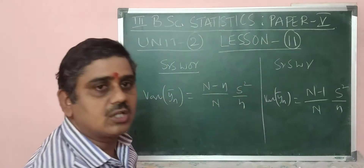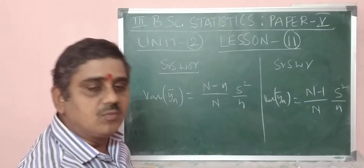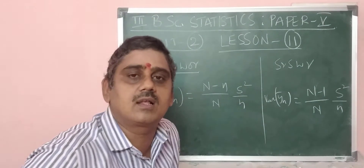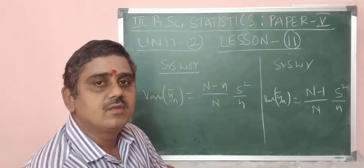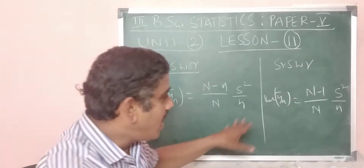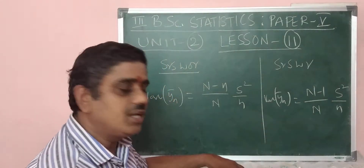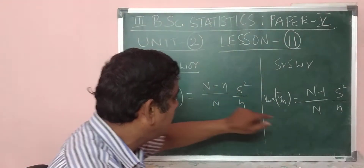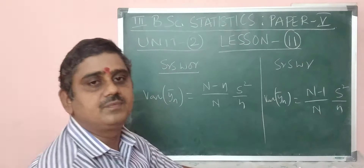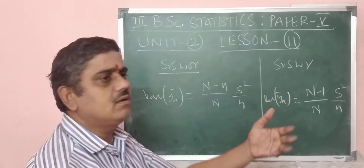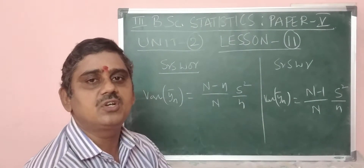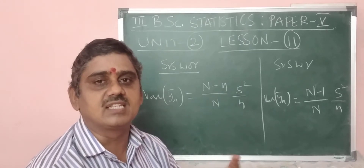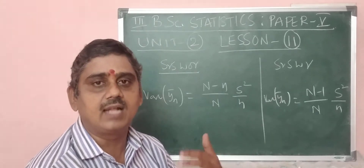These are the formulas for both SRSWOR and SRSWR. To compare these two, notice that all terms are the same except one: in SRSWOR the numerator factor is (capital N minus small n), whereas in SRSWR it is (capital N minus 1).